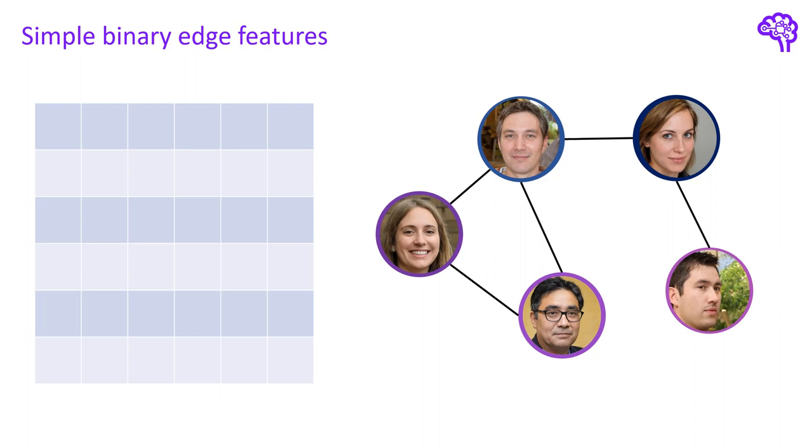Using edge features in graph neural networks is still a hot research topic. And there are different ways how we can do this. As you might know, edge features are, just like node features, nothing else but a vector of values. Let's start with the most basic form of this vector, a single binary value.